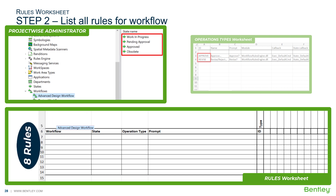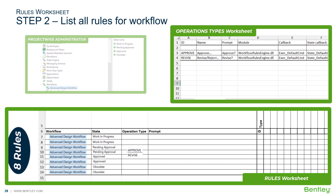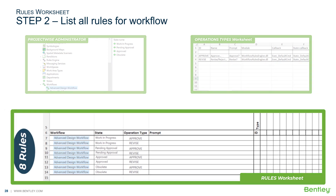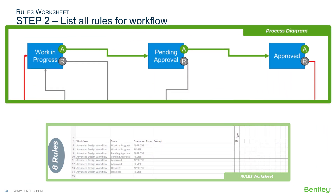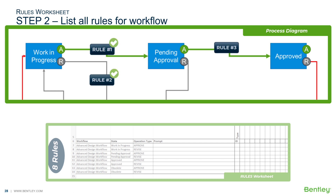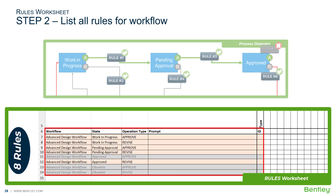Four states times two operations gives us a total of eight possible rules. We enter the workflow name and the state names verbatim from ProjectWise Administrator and the operation type IDs from the operation types worksheet. Referring to the process diagram, we see that only five of the eight rules are applicable. Showing the rules in the worksheet that are not applicable is optional, but it's useful so you know that the situations are possible.